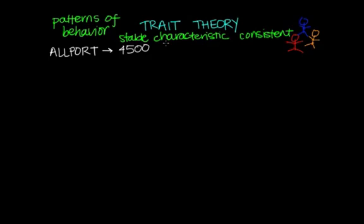That wasn't the original list - apparently the original had over 10,000. From those 4,500, he came up with three basic categories of traits: cardinal traits, central traits, and secondary traits.